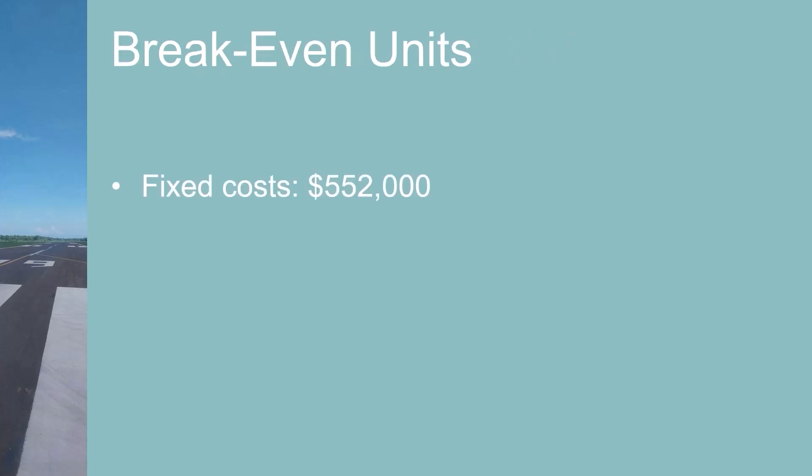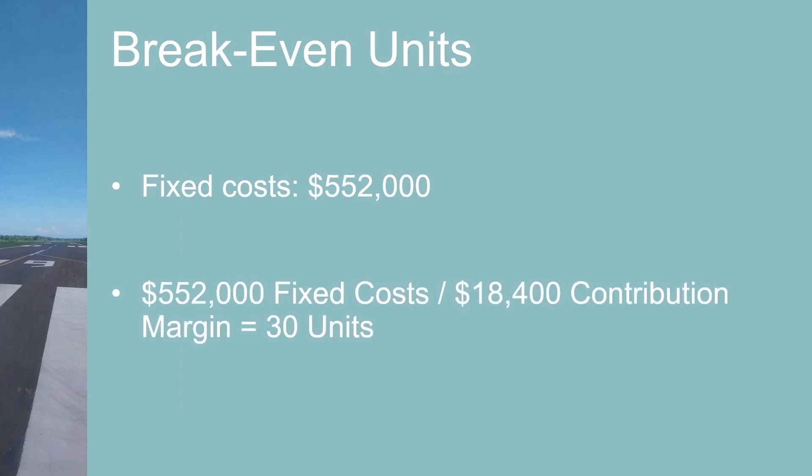In a recent 10-K filing, the three pigs disclose that their fixed costs are $552,000. A quick way to calculate the break-even point is to divide the fixed costs by the contribution margin. In this example, that's $552,000 divided by $18,400, which equals 30. They need to sell 30 of these bundles to break even.